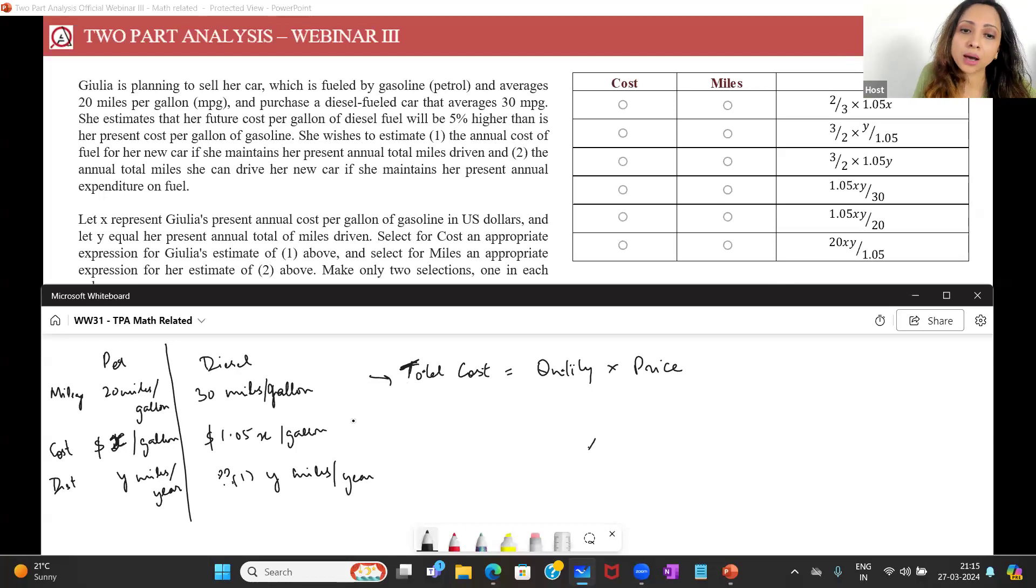Again I'll use the same concept: total cost is quantity into price. I have to find the total cost for petrol car. I say quantity into price currently for the petrol car. Quantity is given by distance upon mileage. So this will simply be y upon 20, I'm talking about the current petrol expenditure, into x the cost, the price. This is her current expenditure.